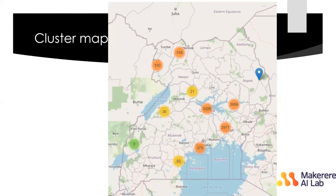Cluster maps are more about the data points. This showed submissions from some point before the lockdown when farmers were submitting. You can see that the eastern region was performing better than the rest of the regions. A cluster map is interactive, so you can zoom in to see the distribution of data collection.